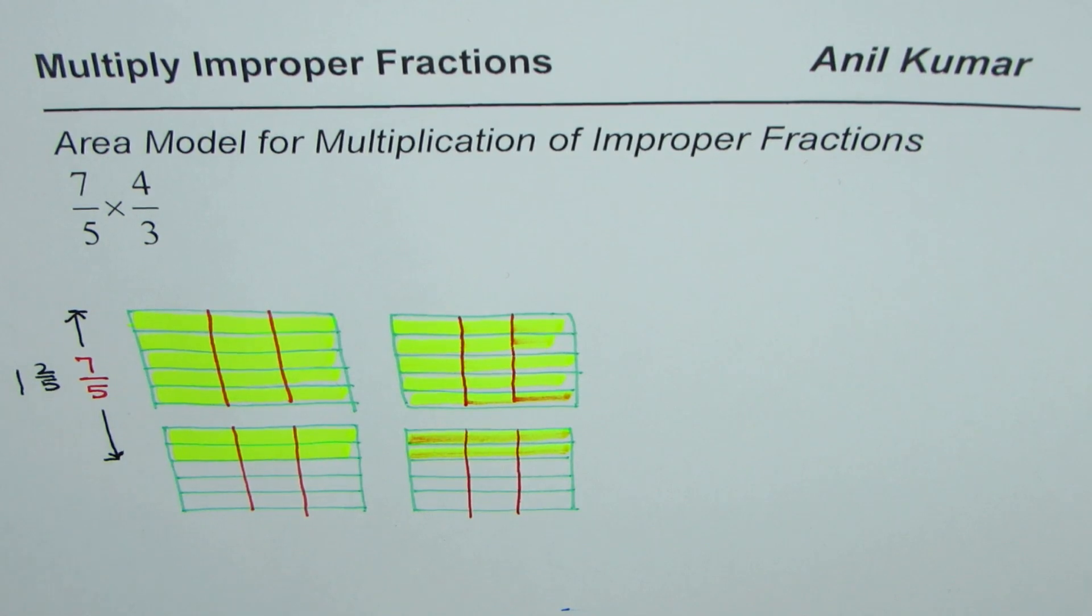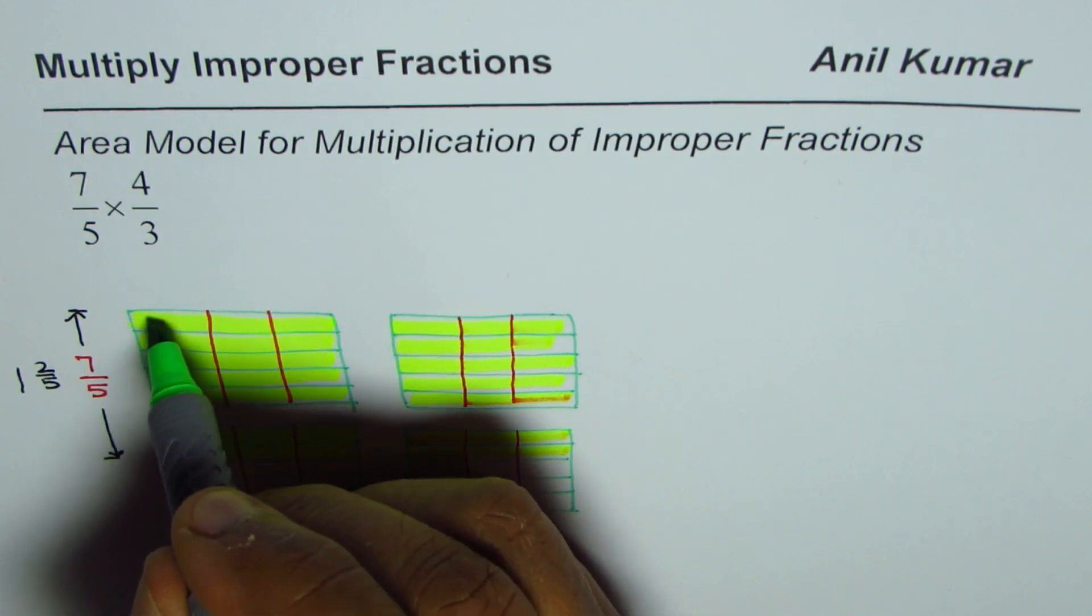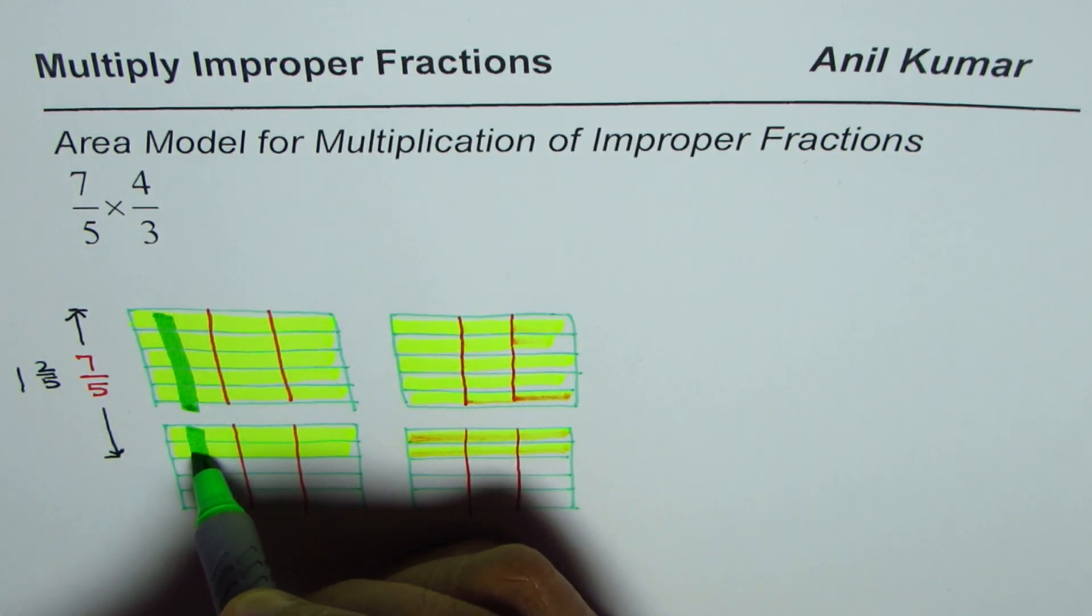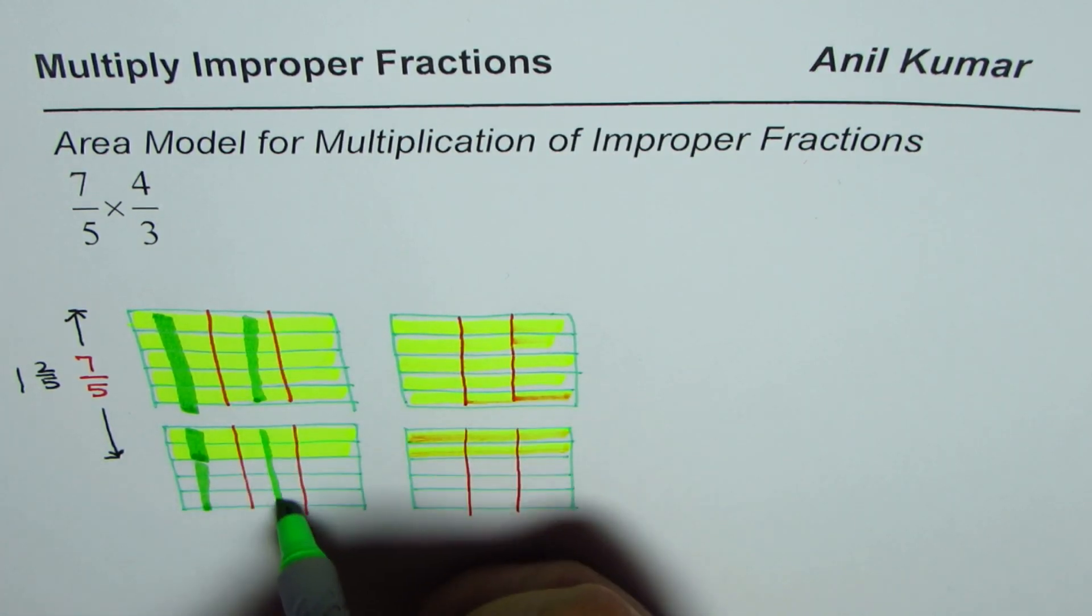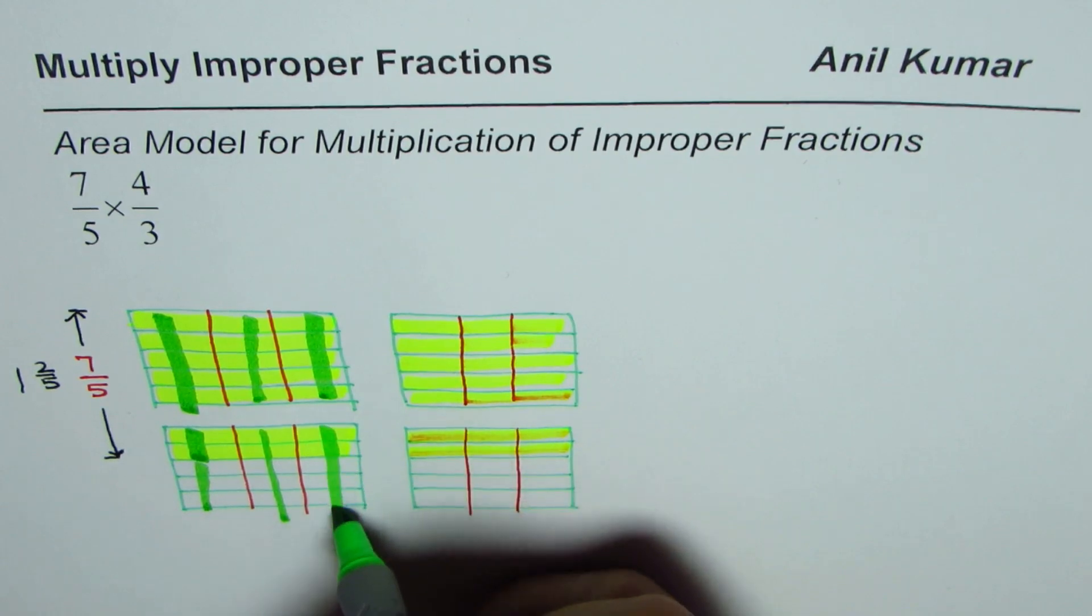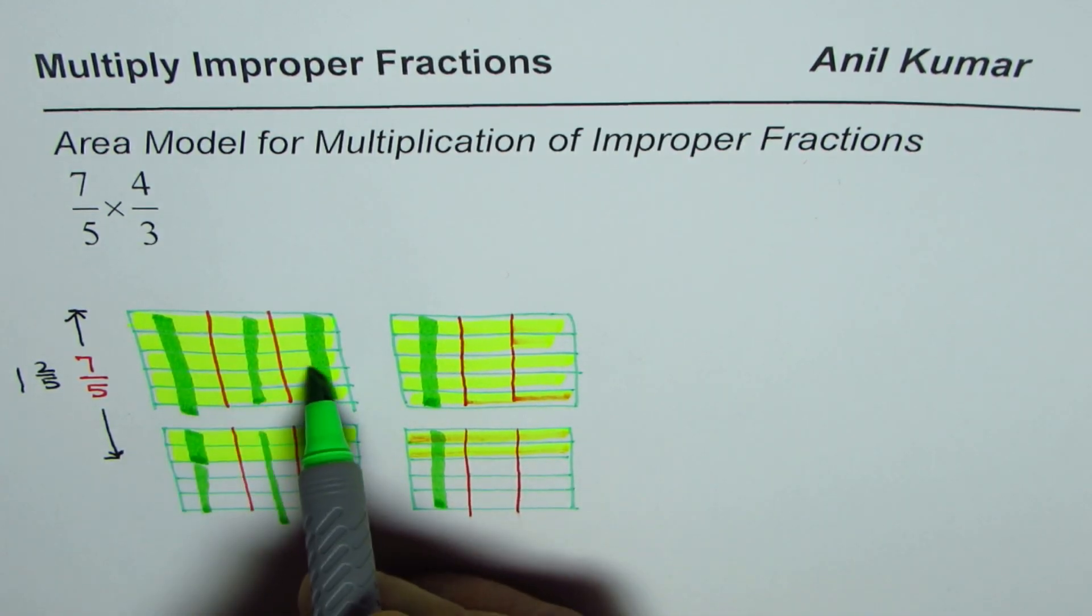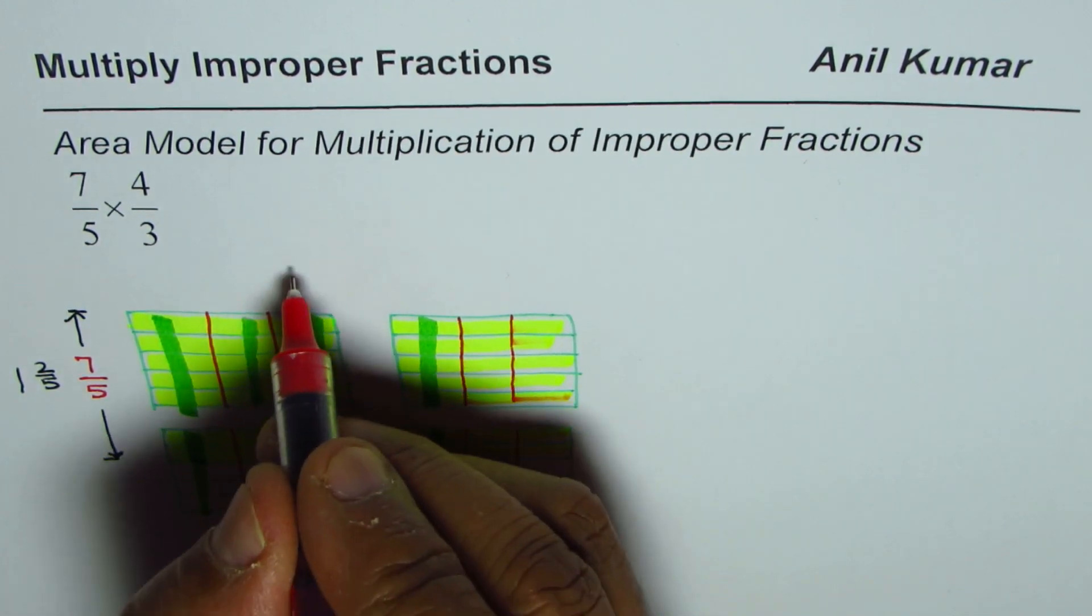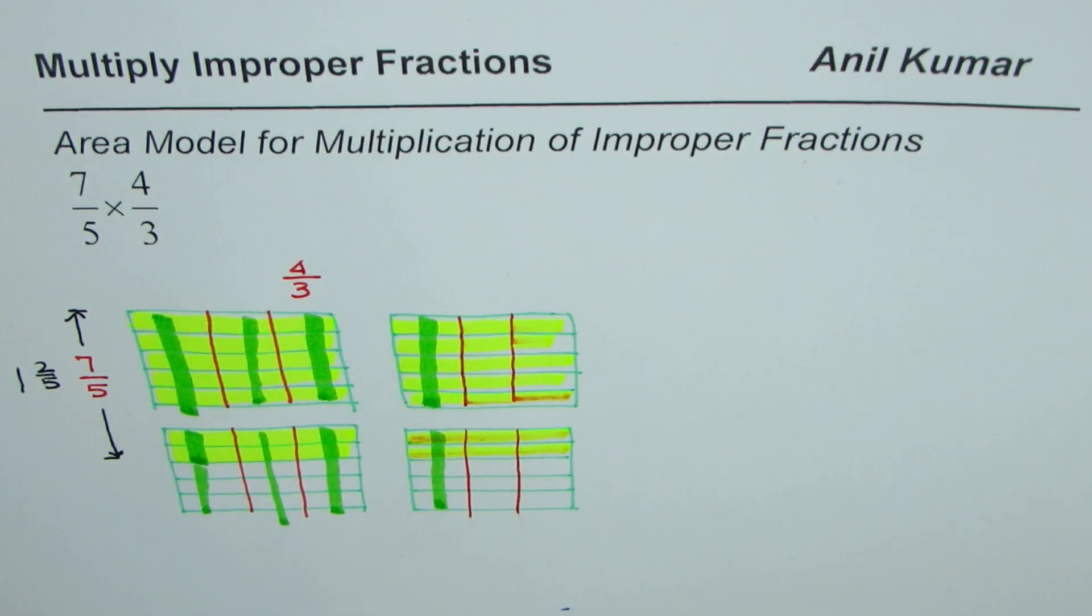Now let us select 4 out of 3. So 4 out of 3 means you will select 1. So this is all you select. So I am just shading up to here. Let's shade 4 out of 3. So that is the fourth one. So 1, 2, 3, 4. So we have selected 4 out of 3.